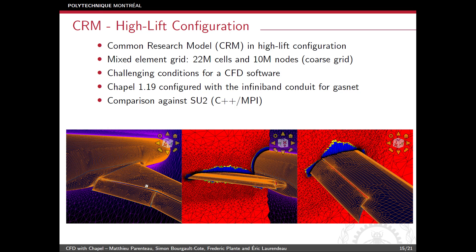To analyze this, we used the Common Research Model in high-lift configuration. We show three snapshots of the volume grid — a wing in high-lift configuration typical for takeoff and landing on a transport aircraft. We chose this configuration because it remains a big challenge for CFD software due to the complicated conditions it creates. This grid has 22 million cells and 10 million nodes, and is actually a coarse grid for this type of configuration.